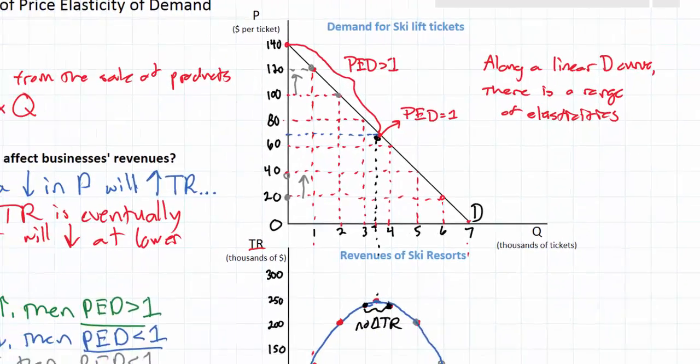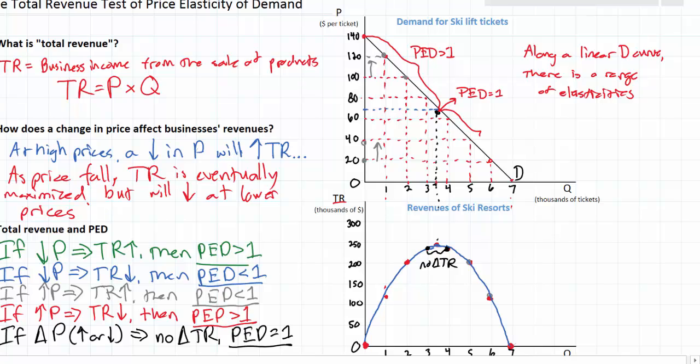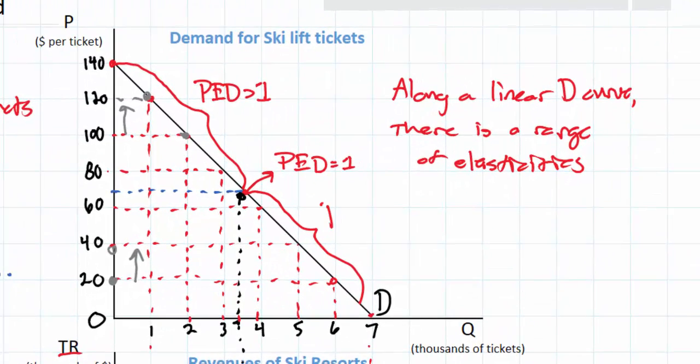And then below that price, decreases in price actually cause the revenues of ski resorts to fall, which is only possible if the percent change in quantity was smaller than the percent change in price, meaning that demand is inelastic. PED value is less than one.